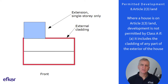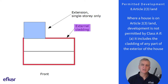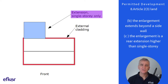Condition eight: article 2-3 land. This land category is explained in video number one. Where a house is on article 2-3 land, development is not permitted by class A if: A, it includes the cladding of any part of the exterior of the house; B, the enlargement extends beyond the side wall; or C, the enlargement is a rear extension higher than single storey.